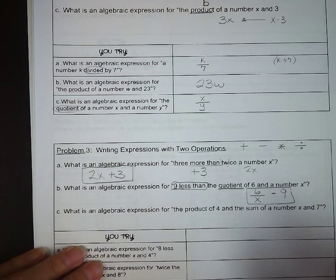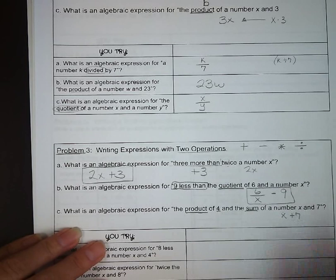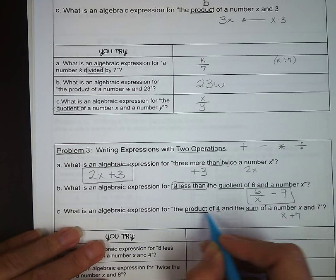What is an algebraic expression for the product of four and the sum of a number x and seven? So we have the sum, x plus seven, is being added together, but we are multiplying the whole thing by four, so we're going to put that in parentheses with the four on the outside.